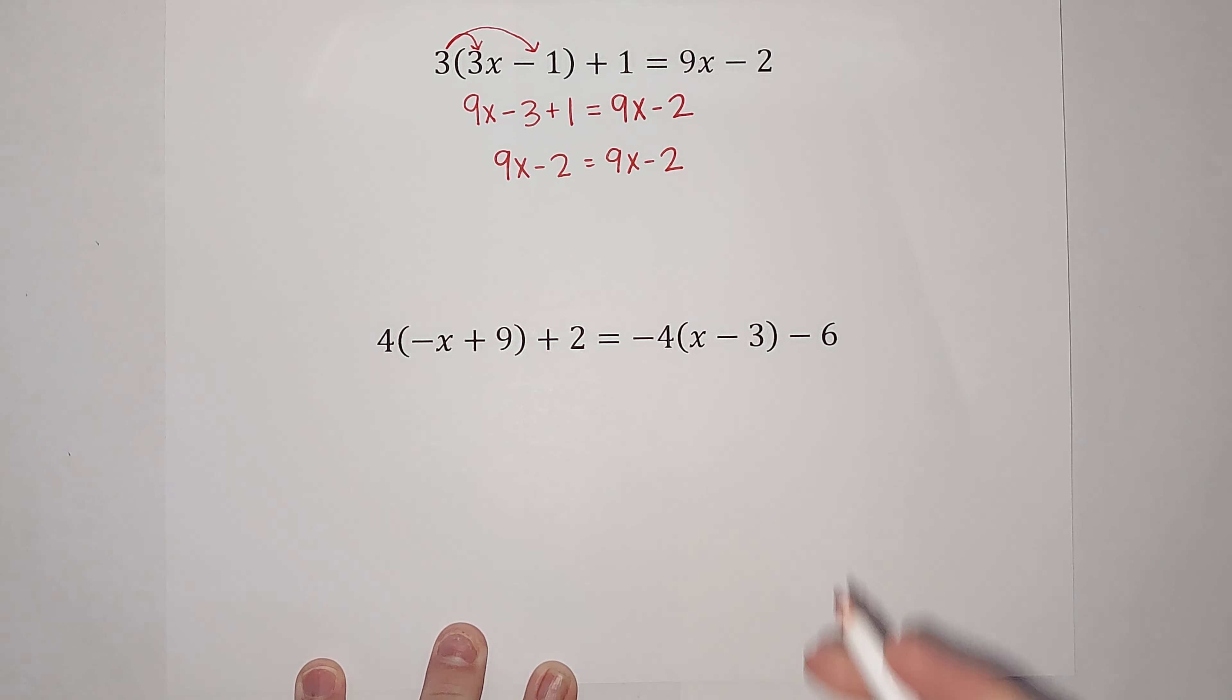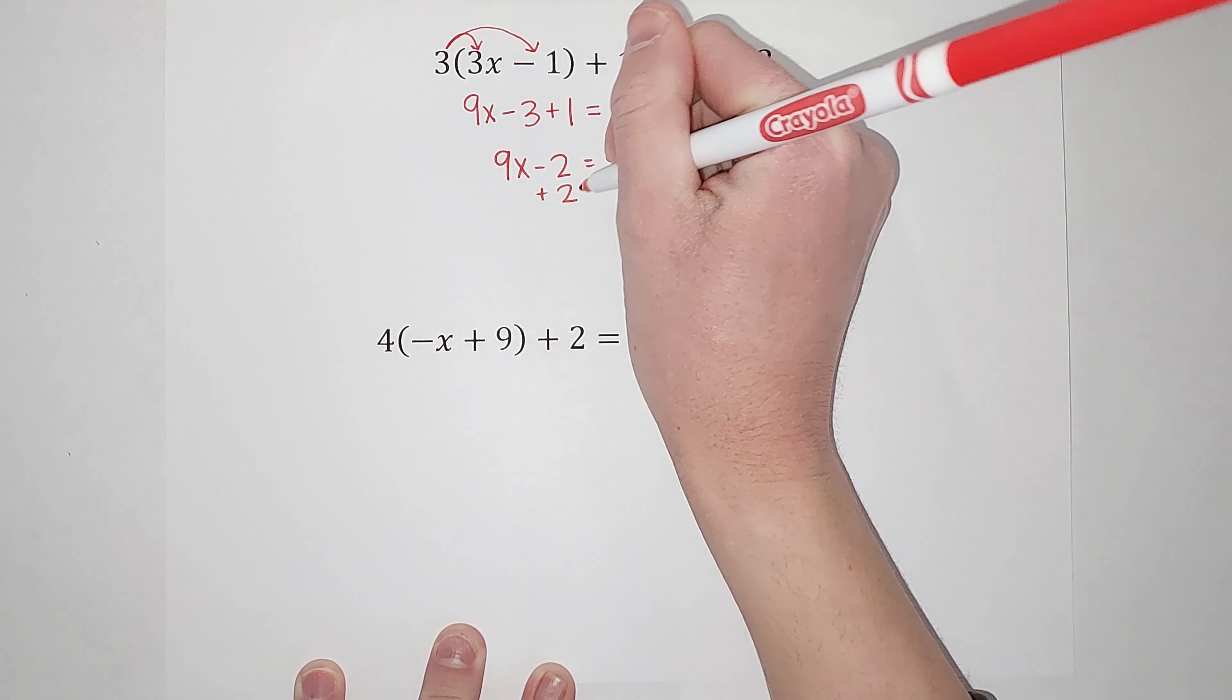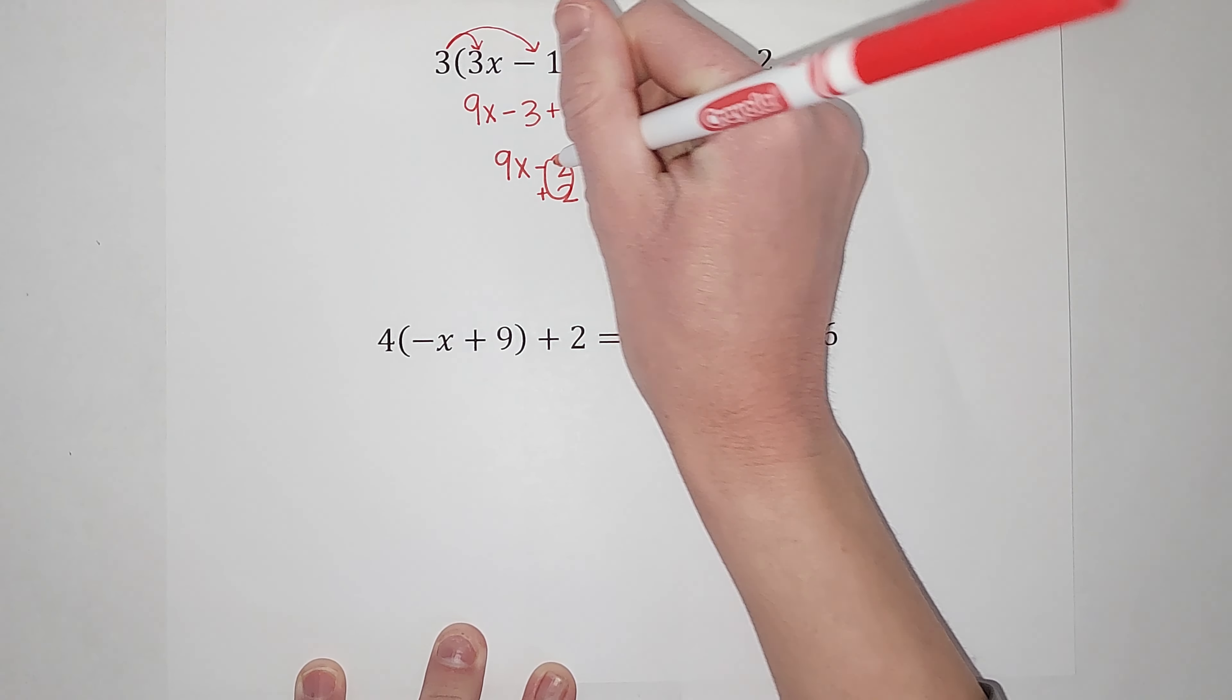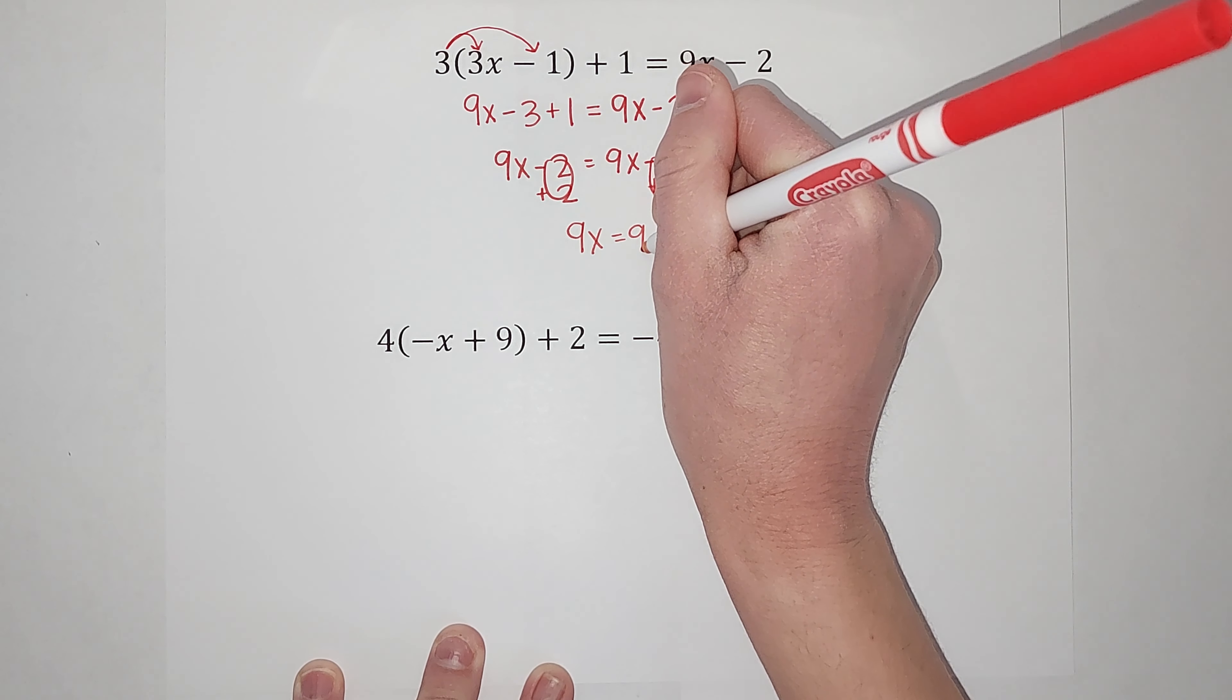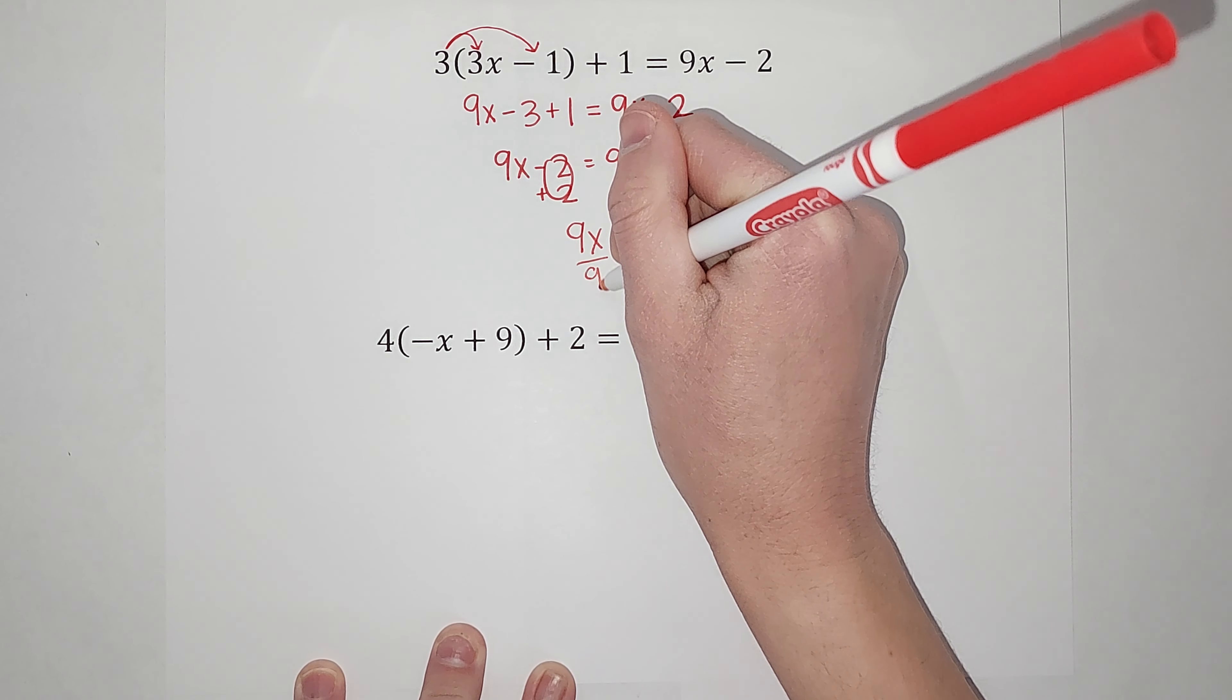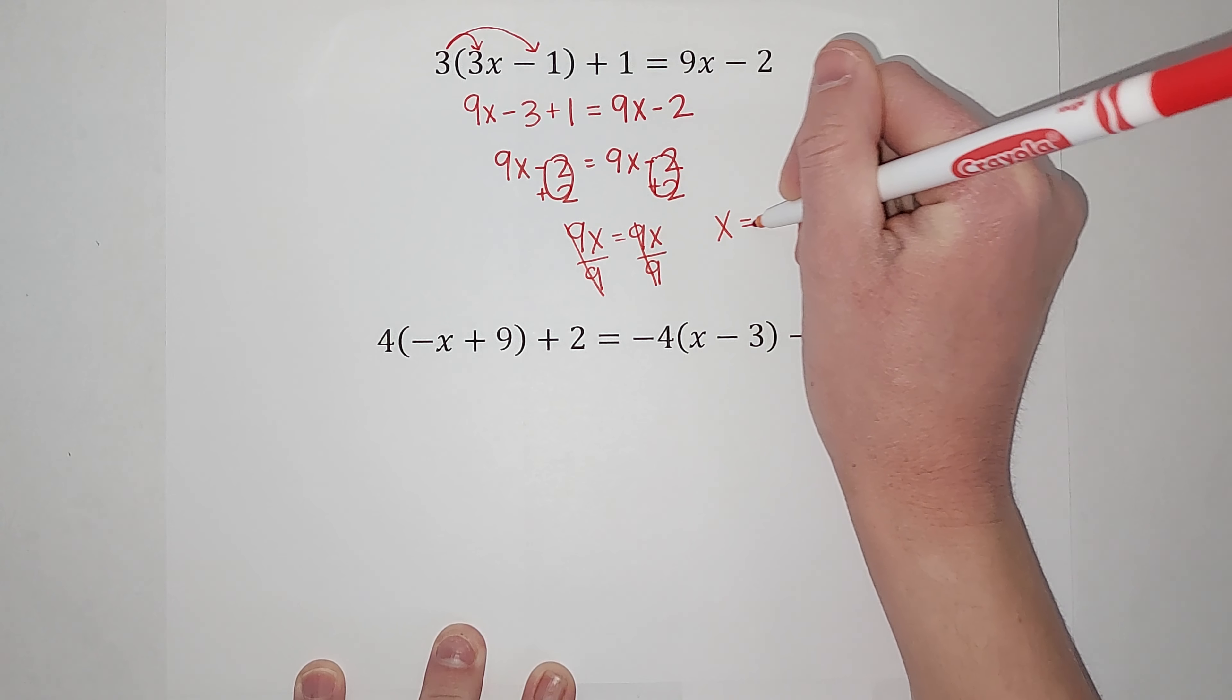You might be noticing something, but let's keep going. So I want to get everything together, the numbers and the x's, so I'm going to add 2. Oh, look. They're gone on both sides. That doesn't really happen. So I have 9x equals 9x. I could divide by 9 if I want to get x alone. And I'm left with x equals x.